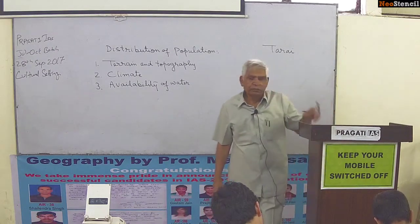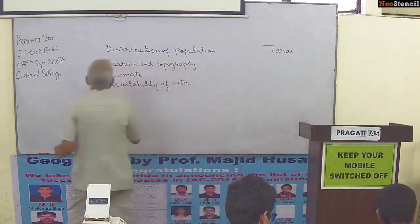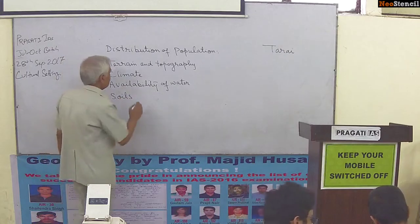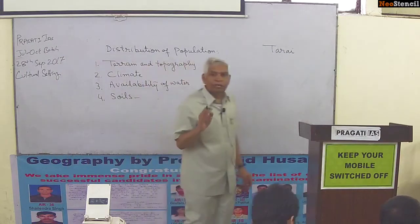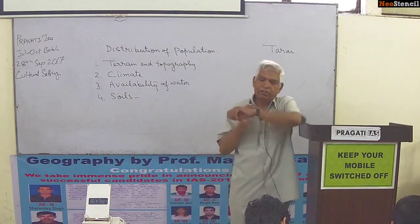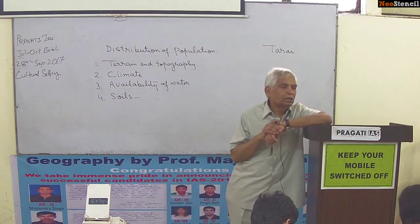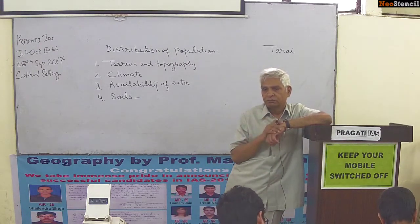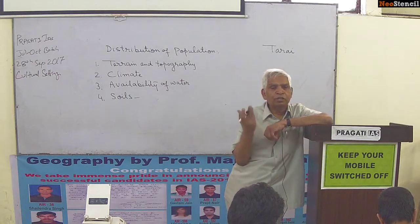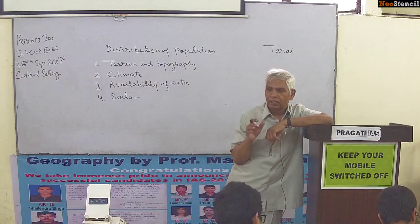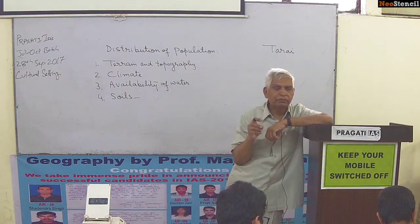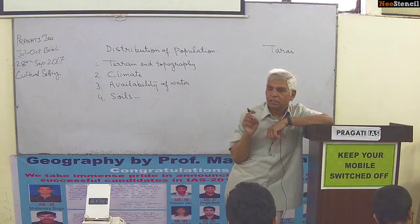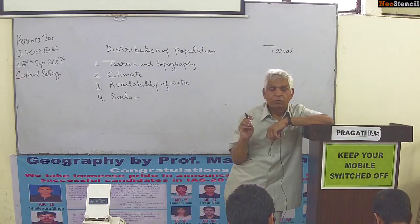The next determinant is soils. We have more fertile and productive soils, and less productive soils. The concentration of more people is in areas where the soil is alluvial or more fertile, because a farmer can obtain two or three crops in a year. Alluvial soil is found in areas where perennial rivers flow. Consequently, the northern plains of India are more densely populated.